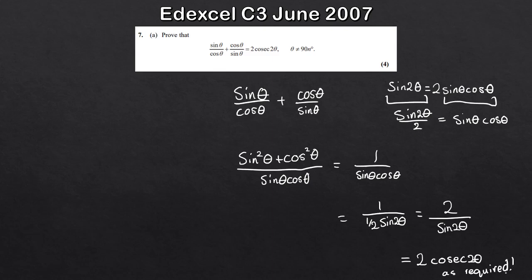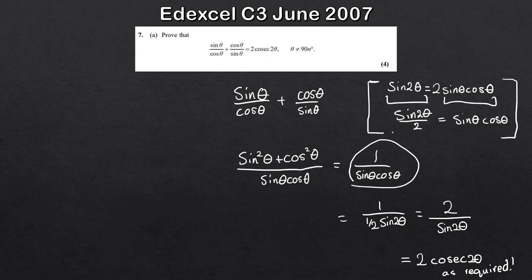So there we go — a bit of a tricky one if you're not sure where to start. The key insight is spotting that sinθ cosθ is half of sin 2θ. Once you've seen an example of that manipulation it might be a bit easier in the future. So let's take a look at the final question.